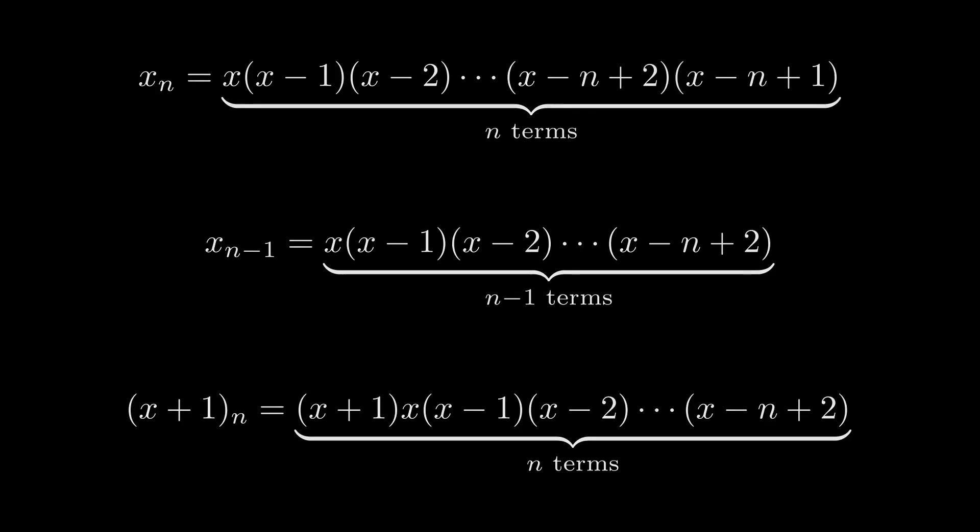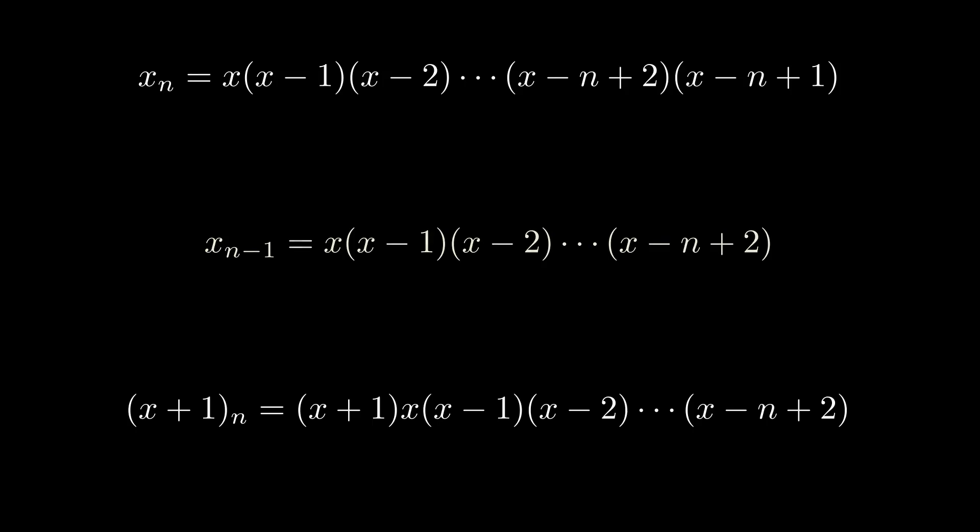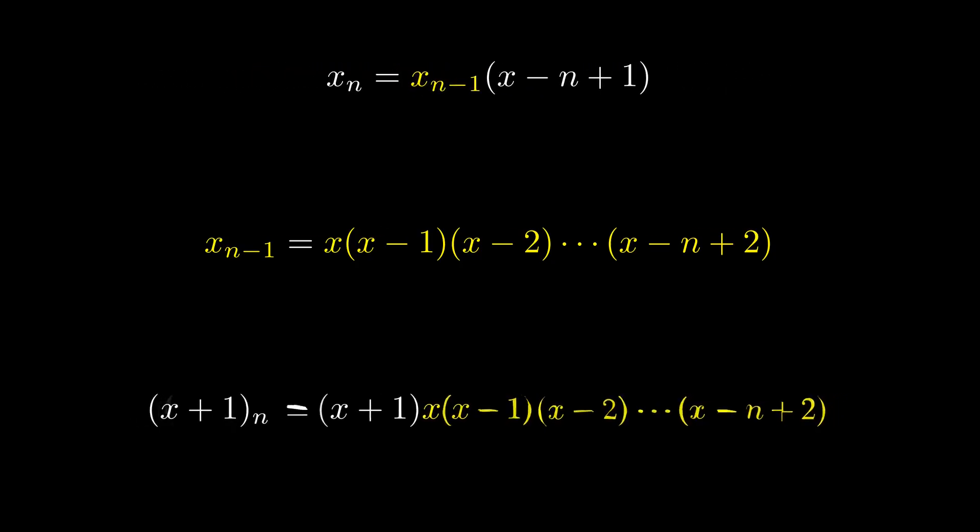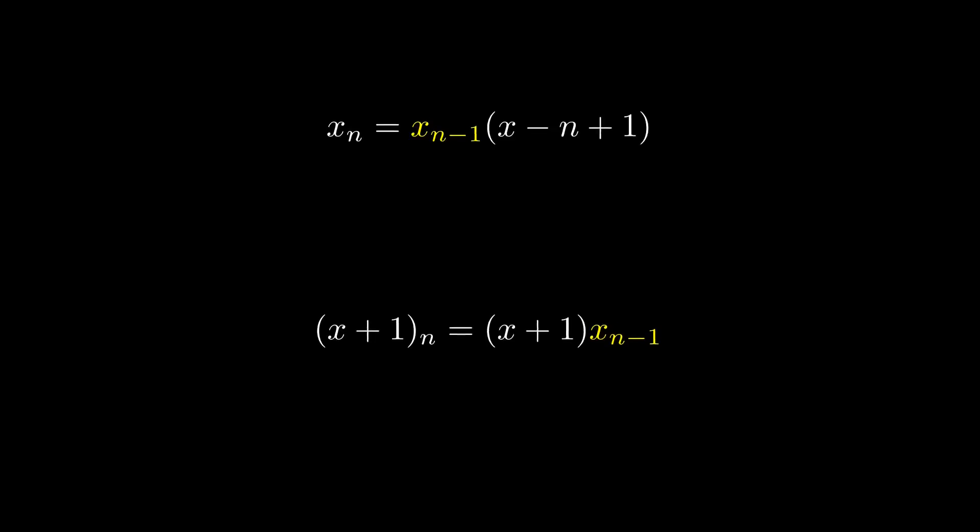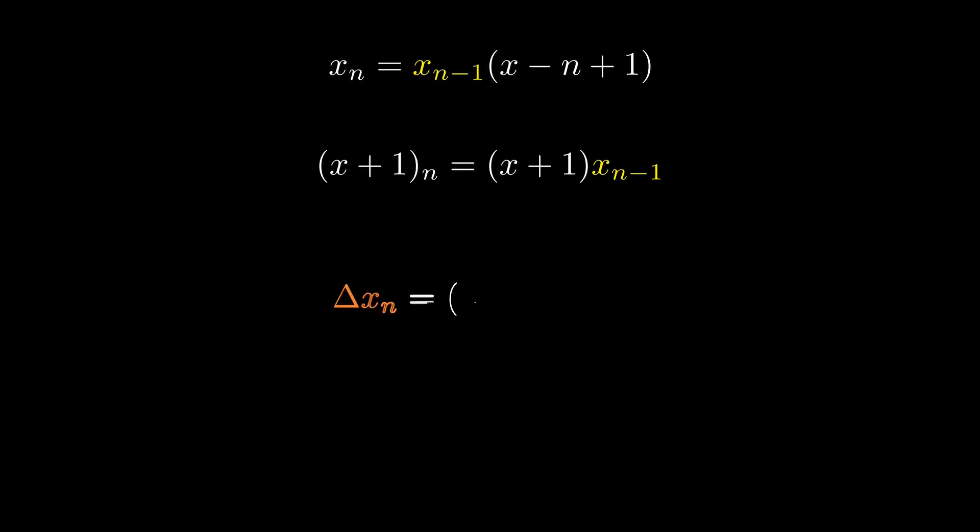Notice how this x to the falling n minus 1 appears as a subproduct in both of these other expressions. Let's sub that in. Now when we consider the delta of x to the falling n, we get this common factor in yellow.